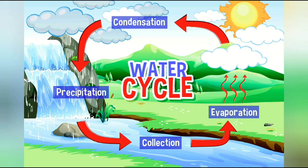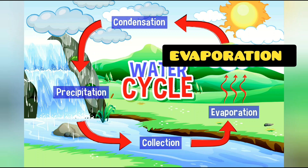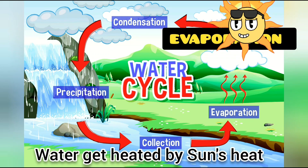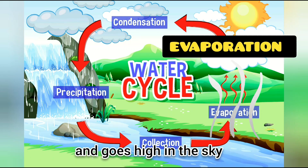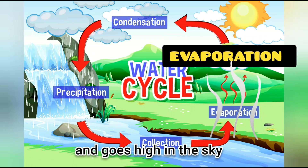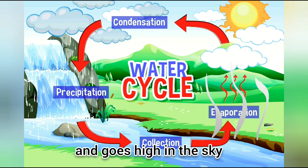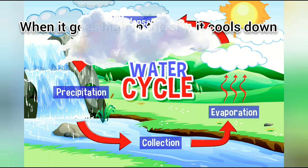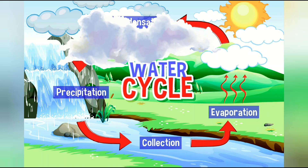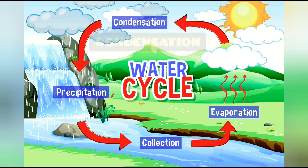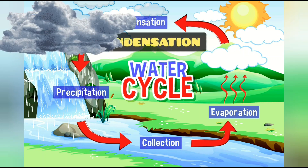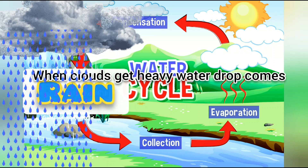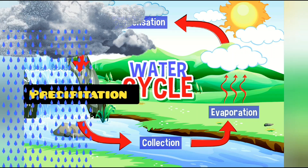The first step is evaporation — when the water gets heated by the sun's heat and it goes high in the sky. When it goes high in the sky, it cools down and turns into a cloud. That is called condensation. When clouds get heavy, water drops come — that is called rain. The process is called precipitation.